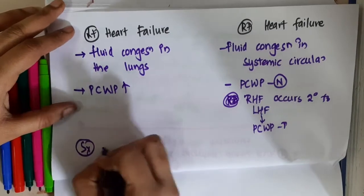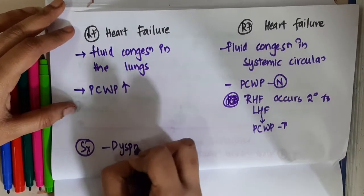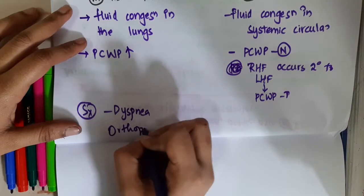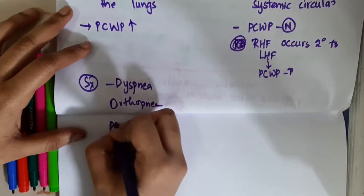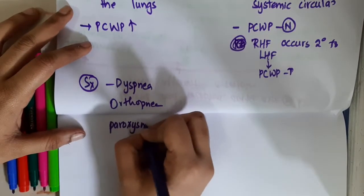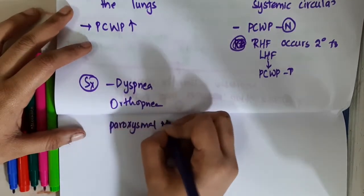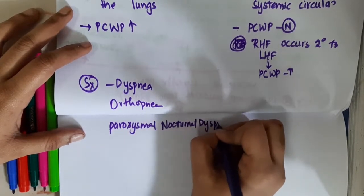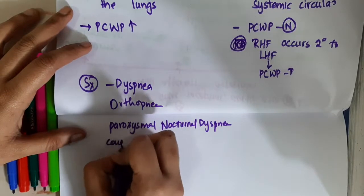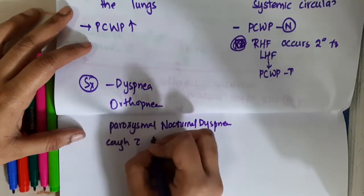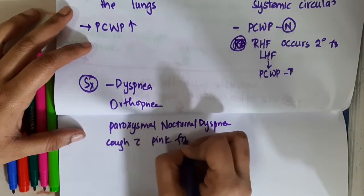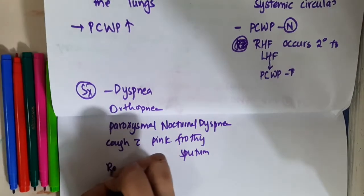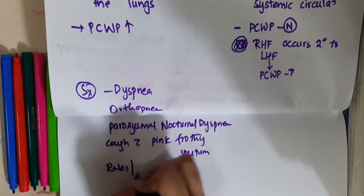If you see the left heart failure symptoms, the patient will have dyspnea, orthopnea, paroxysmal nocturnal dyspnea, cough with pink frothy sputum, and rales or crackles.